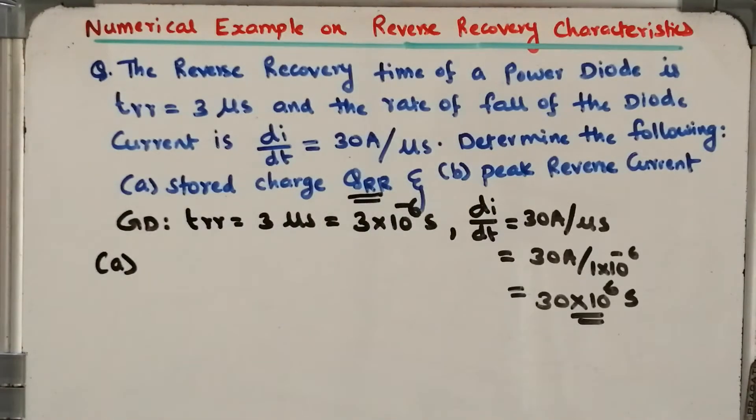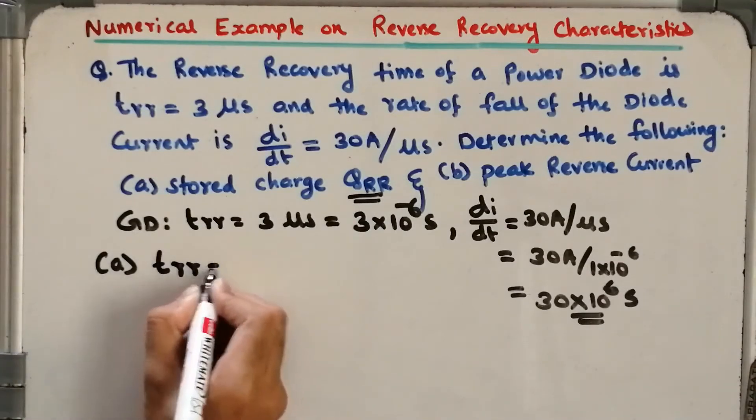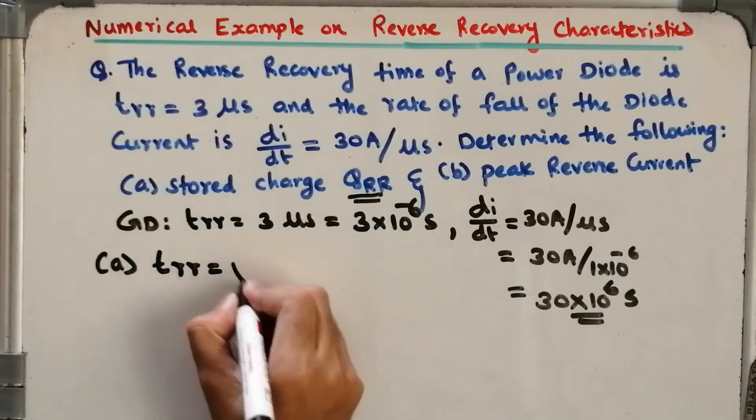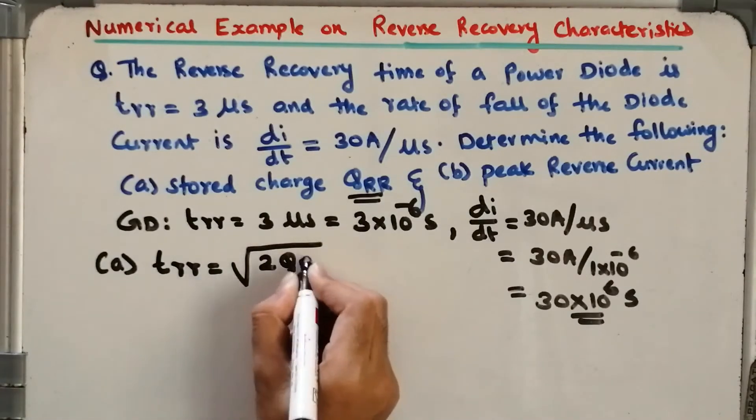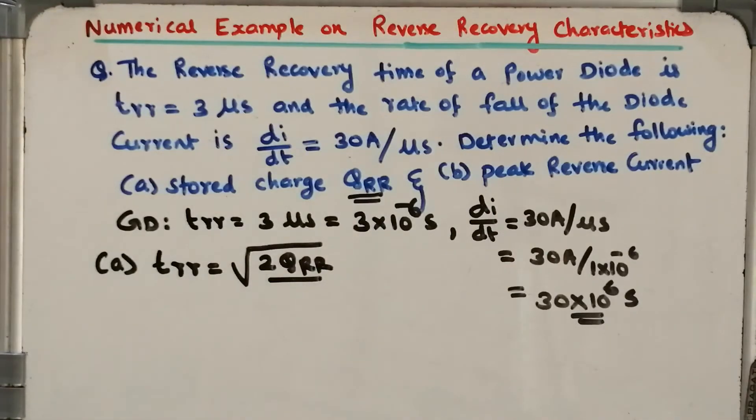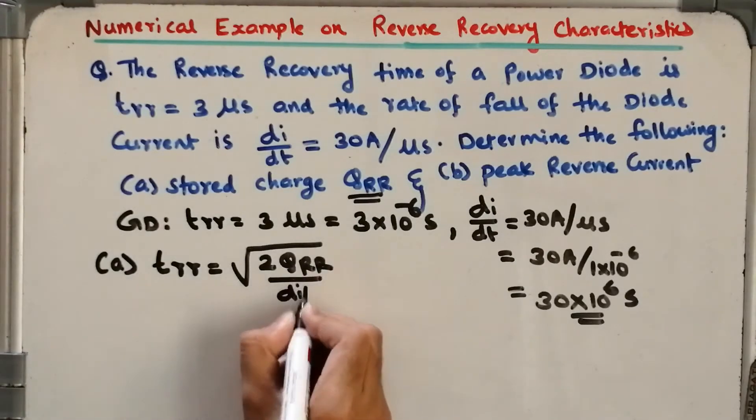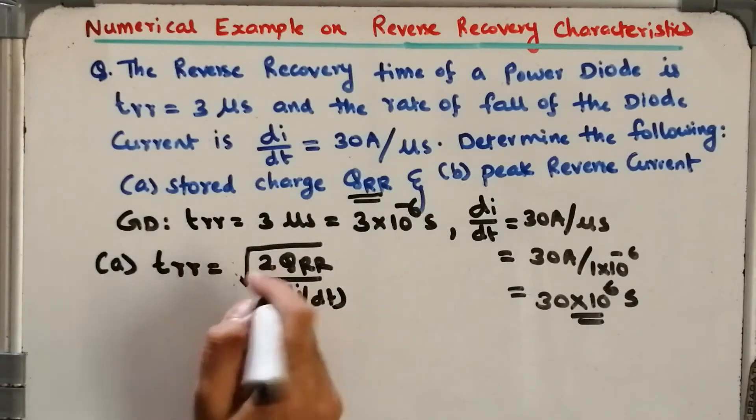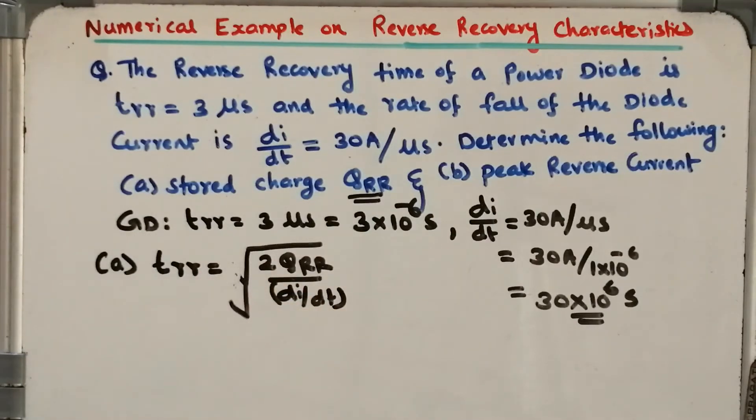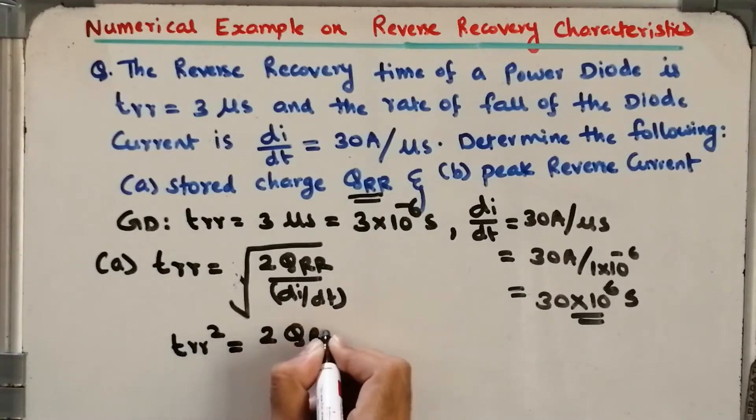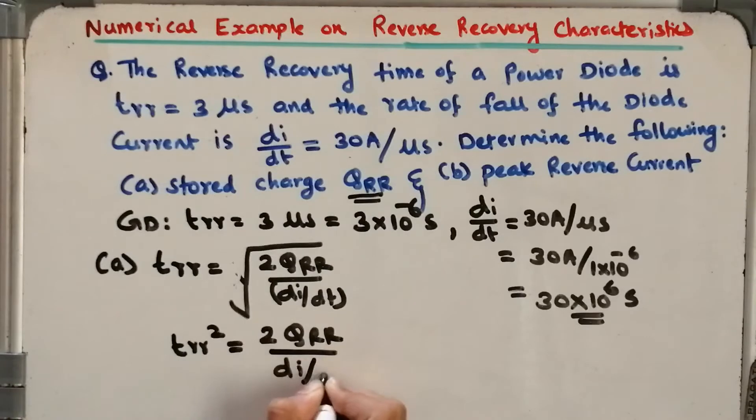Let me recall the expression: TRR is given by TRR equals square root of 2QRR divided by dI/dt. Or I can write TRR squared equals 2QRR divided by dI/dt.